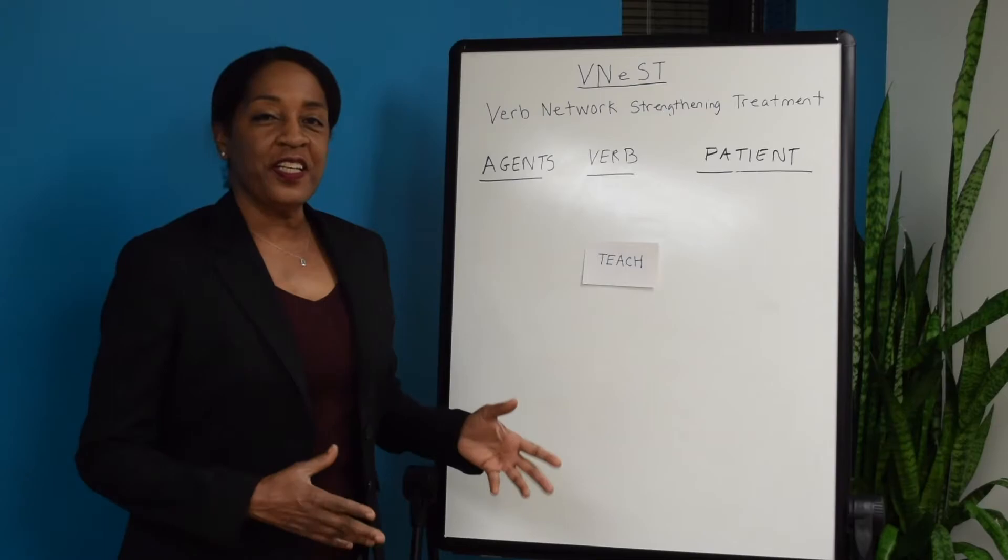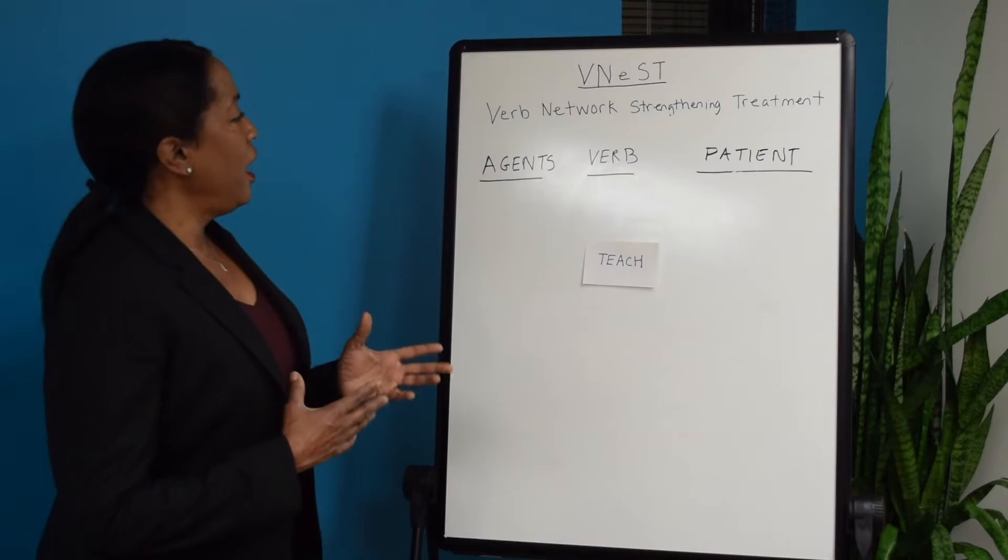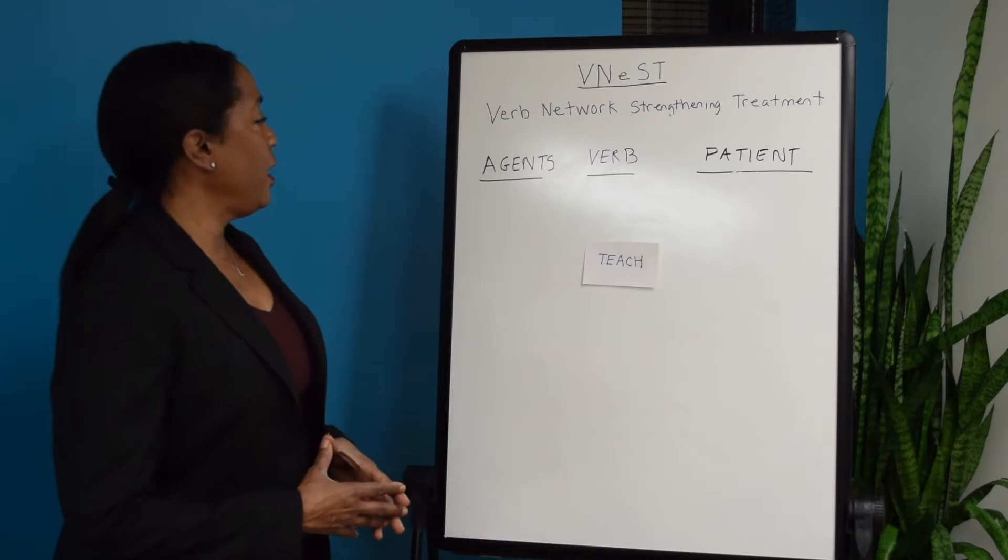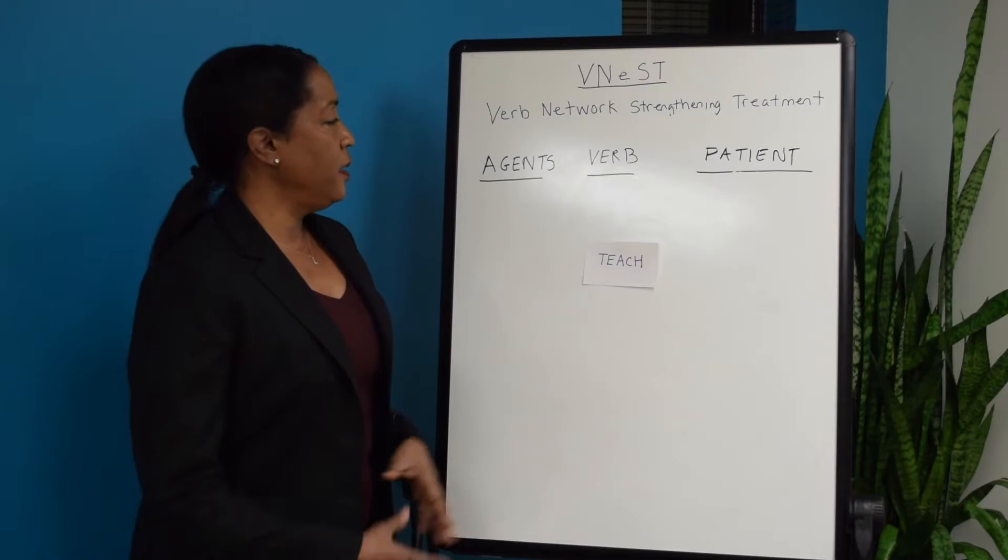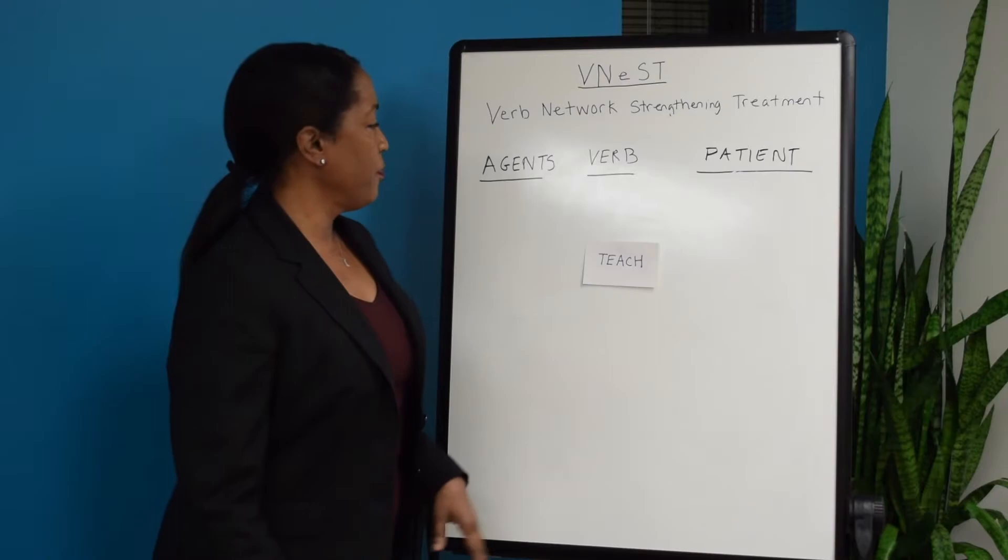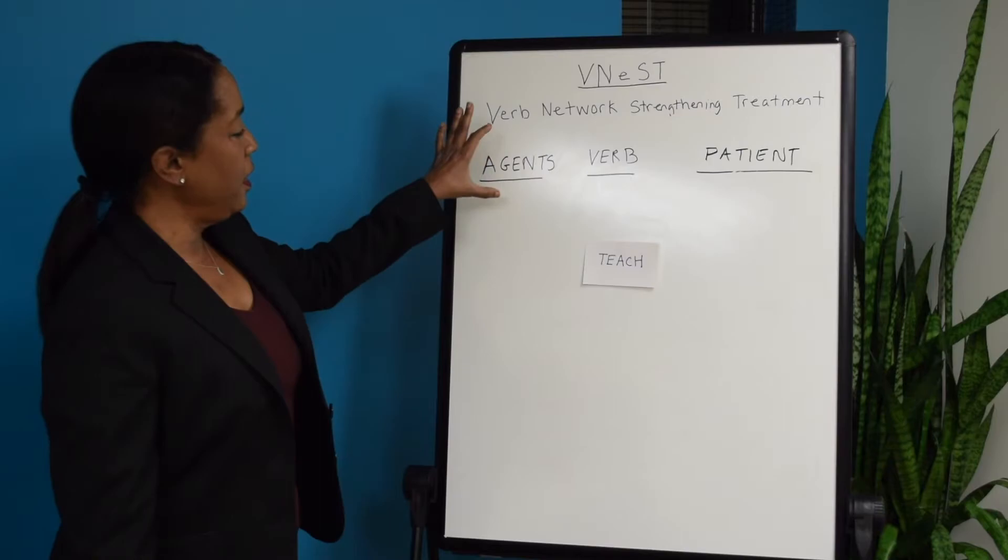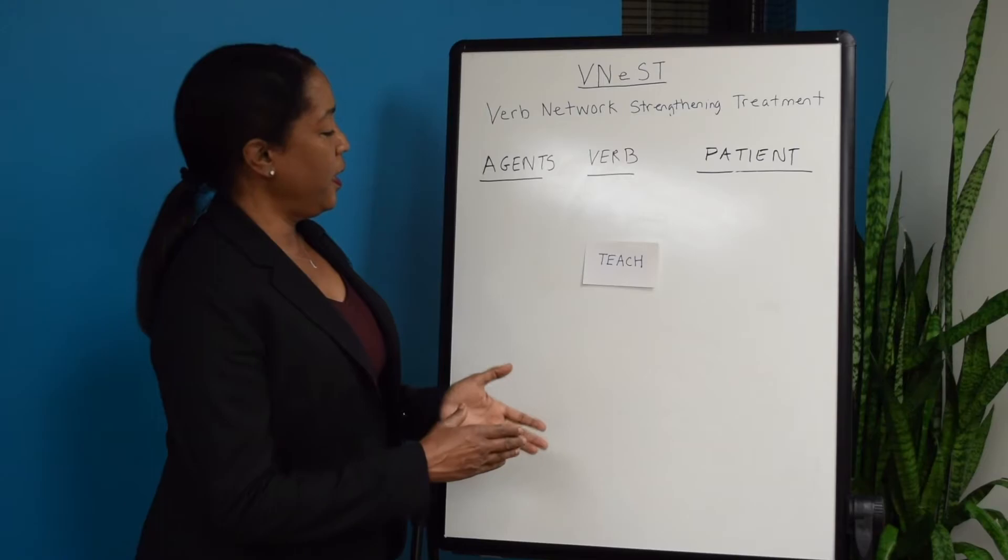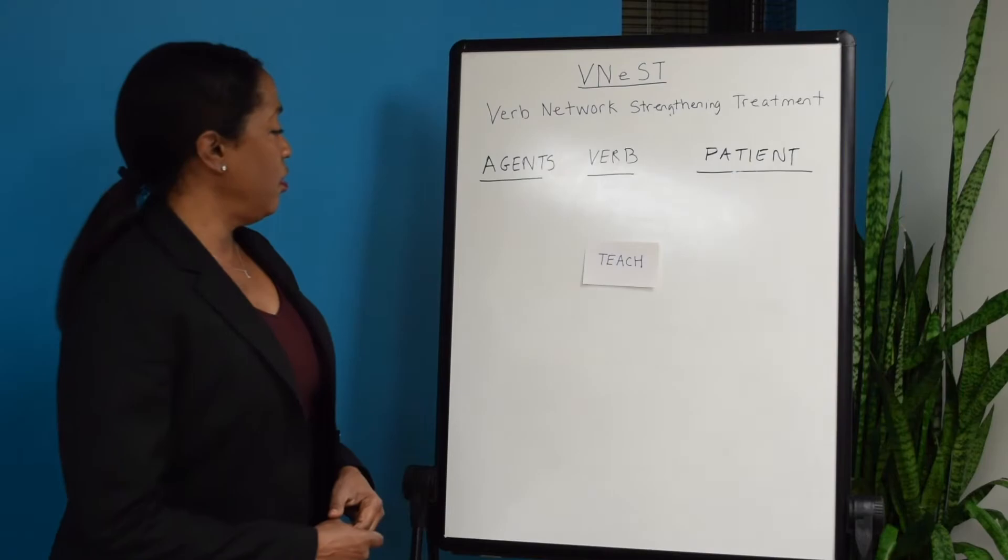While semantic feature analysis helps improve word finding with nouns, a VNUS strategy will help a patient identify verbs. The way that would happen is they would be given a target verb and then they have to identify who does the verb and to whom the verb happens to. The question of who does the verb would be known as the category of the agent, and the person or thing that the verb happens to will be known as the patient.